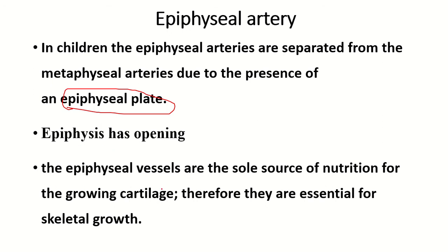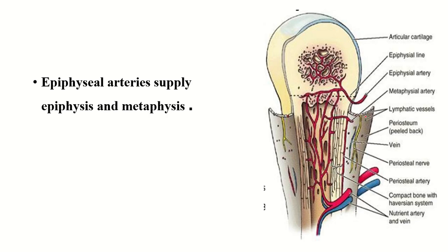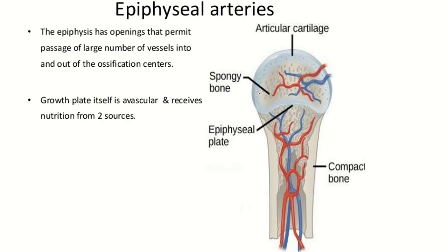The epiphyseal vessels are the sole source of nutrition for the growing cartilage and are therefore essential for skeletal growth. The epiphyseal artery enters within the epiphysis and one of its branches enters the metaphysis. However, branches of the epiphyseal artery and branches of the metaphyseal artery never anastomose due to the presence of the epiphyseal plate.